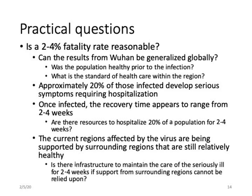Another question: is the 2 to 4% fatality rate really reasonable? We don't know if results from Wuhan can be generalized, or whether that population is representative of the globe. Was the population in Wuhan healthy prior to infection? This is a lung infection — were people subjected to high levels of air pollution that diminished their capacity to fight the virus? Is cigarette smoking a significant factor? What was the standard of healthcare in the region? China is known to have a decent healthcare system.